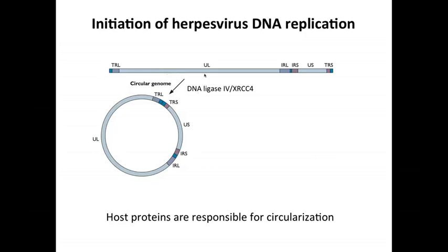In the virion, the viral DNA is linear, as shown here — the herpes viral DNA with the two L and S segments. This DNA comes into the cell, enters the nucleus, and is circularized by a cellular enzyme called DNA ligase 4, also known as XRCC4. Ligases are enzymes that join the ends of DNA together covalently — they take a five prime end and a three prime end and make a phosphodiester bond. So if you put a ligase together with herpes DNA, you get a covalently closed circle.